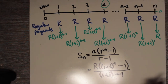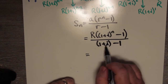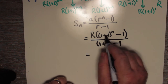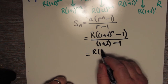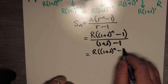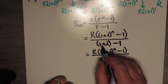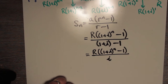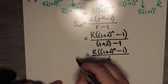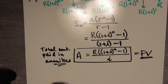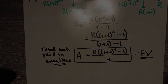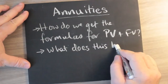We can simplify the denominator by removing the brackets. On the bottom, 1 + i minus 1 — the 1 minus 1 is zero — so we're left with just i on the bottom. This becomes the total amount paid in annuities, also called the future value, because it represents the value at the end of all the payments.